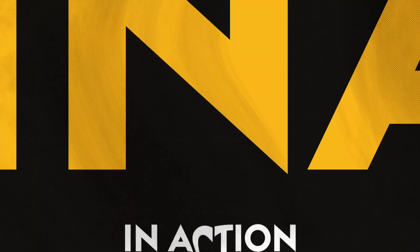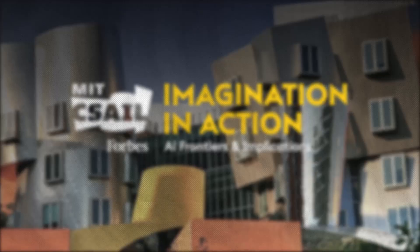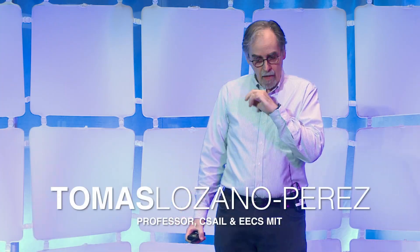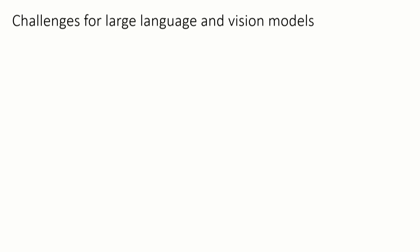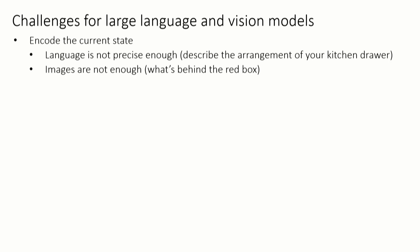What kinds of intelligence are there and how do we get them? Let's focus on a very simple problem. Here's a robot, there's a red box and a couple of objects behind it that it can't see. We told it to place all the objects on the blue mat. Let's consider just that simple problem and ask ourselves: can ChatGPT solve this, or do we want to solve it this way?